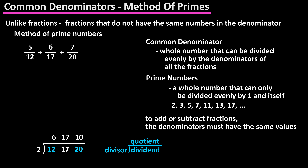Next, we are going to put the quotients of 6, 17, and 10 as the dividends, and again start with the smallest prime number of 2, and see if any of the numbers are evenly divisible by 2. Both 6 and 10 are, so we will put 2 as the divisor, and put those quotients above the given dividends as you see here. 6 divided by 2 is 3, and 10 divided by 2 is 5. Since 17 is not evenly divisible by 2, we will again just bring that number up.